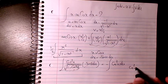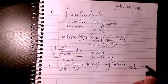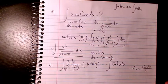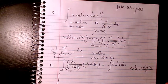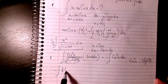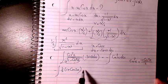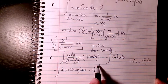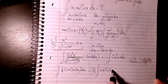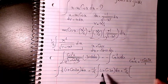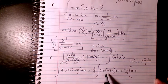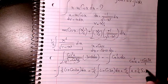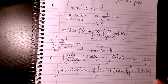We know from the trig identity that cos²(u) equals (1 plus cos(2u)) divided by 2. So the integral becomes negative 1 over 2 times the integral of (1 plus cos(2u)) du. That gives negative 1 over 2 times the quantity: u plus 1 over 2 times sin(2u).